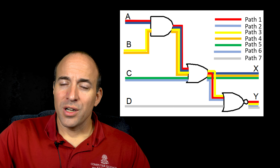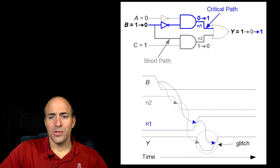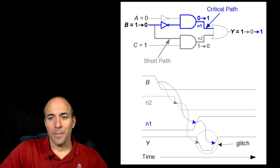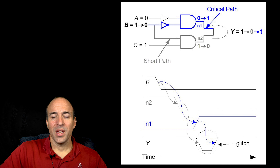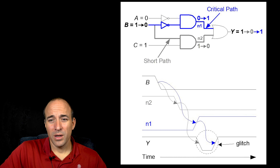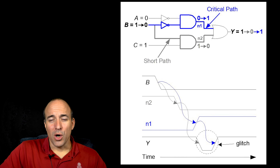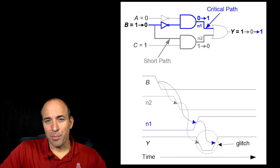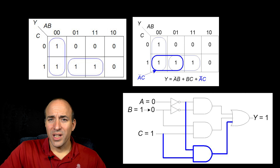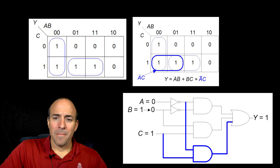When B changes from one to zero, the top input to the final OR gate changes from zero to one, and the bottom input changes from one to zero. But since there's a delay in the change in the top input — the top input sees more delay from the inputs — there's a period of time when both inputs to the OR gate are zero, which causes the output to change from one to zero and then back to one. This is leaving one Karnaugh map group, which converts the output from one to zero, and then entering another Karnaugh group, which brings it back to one.